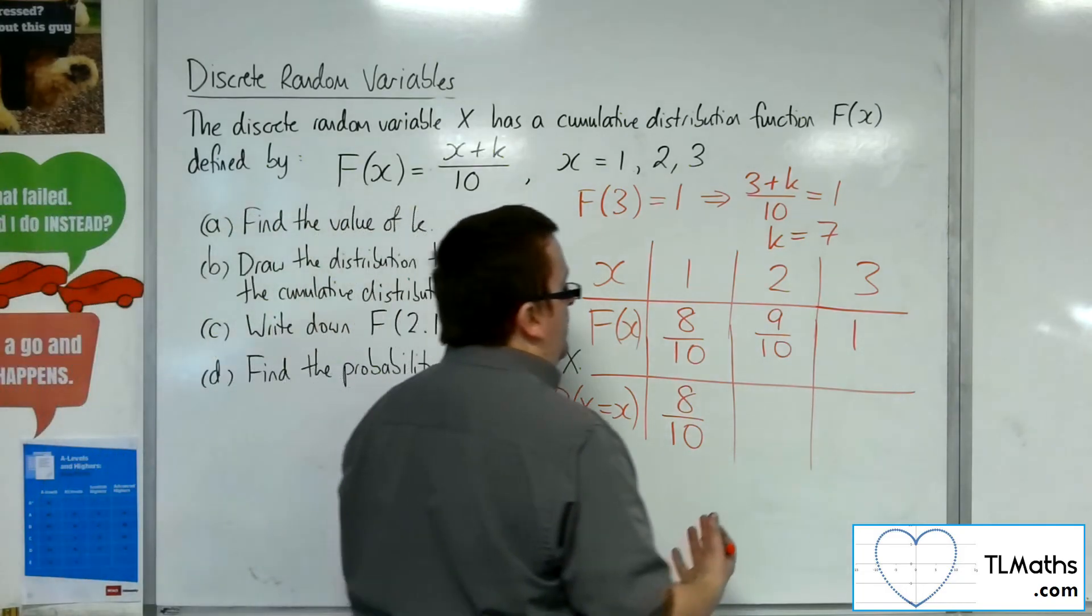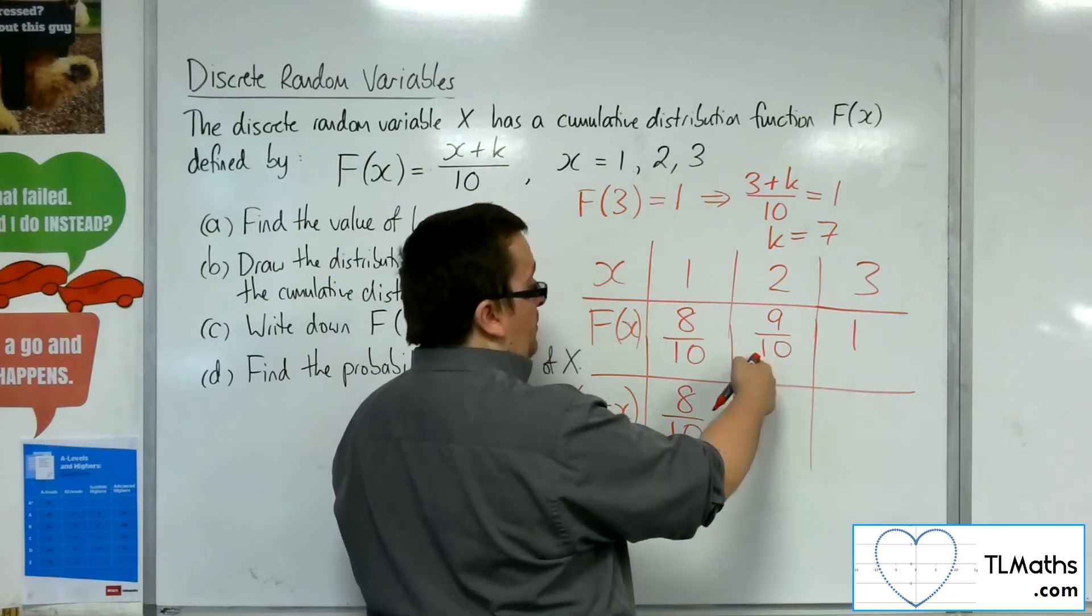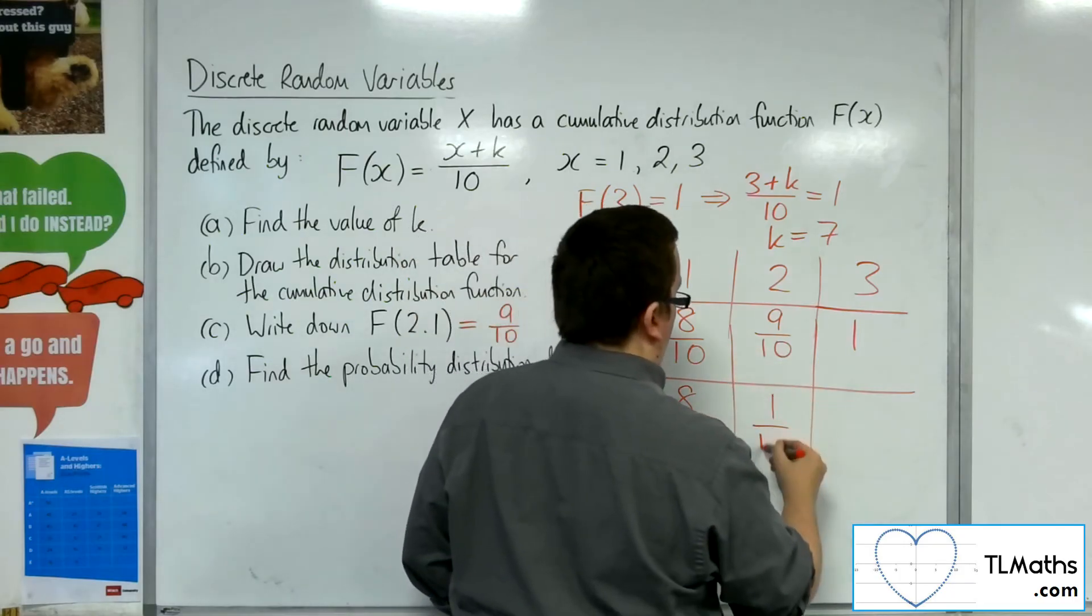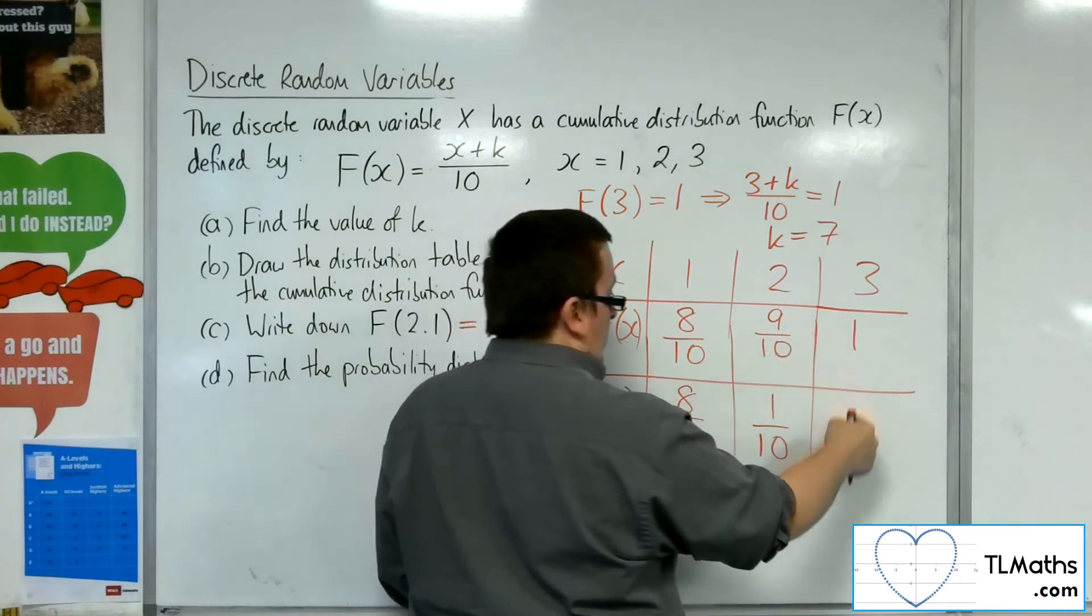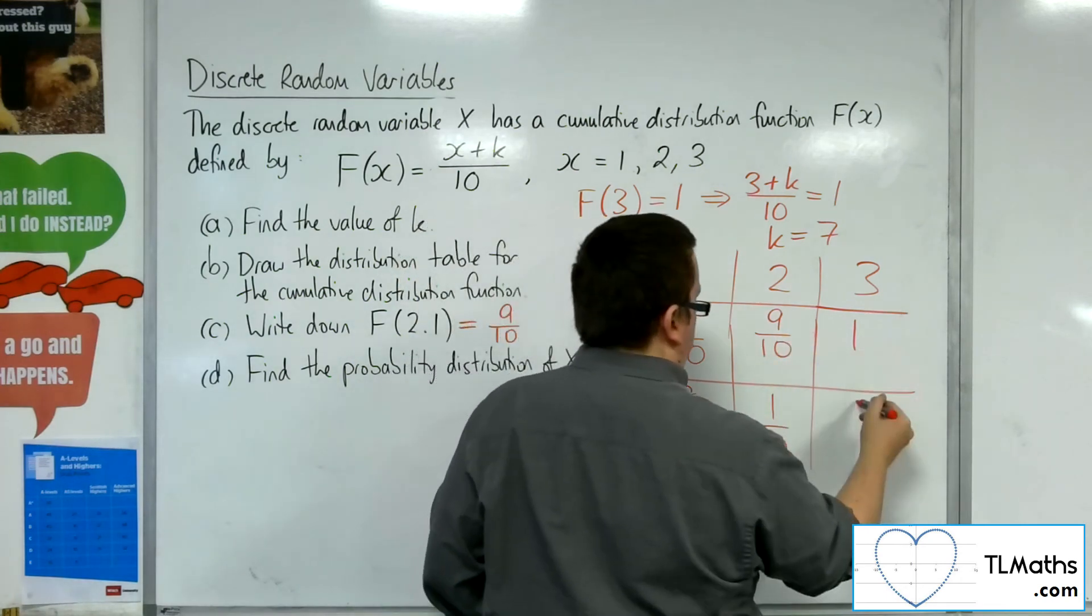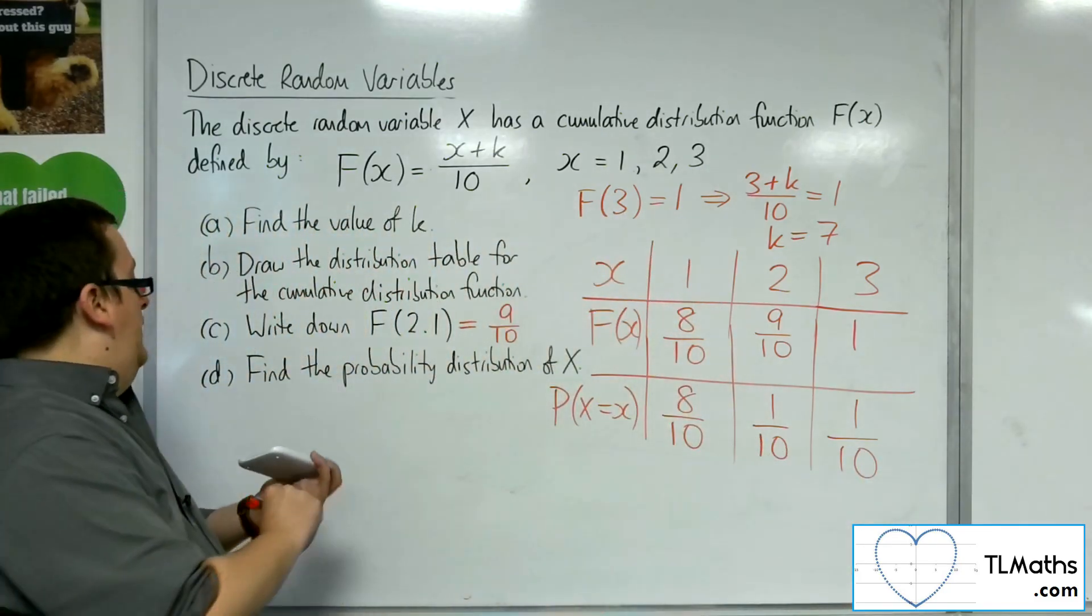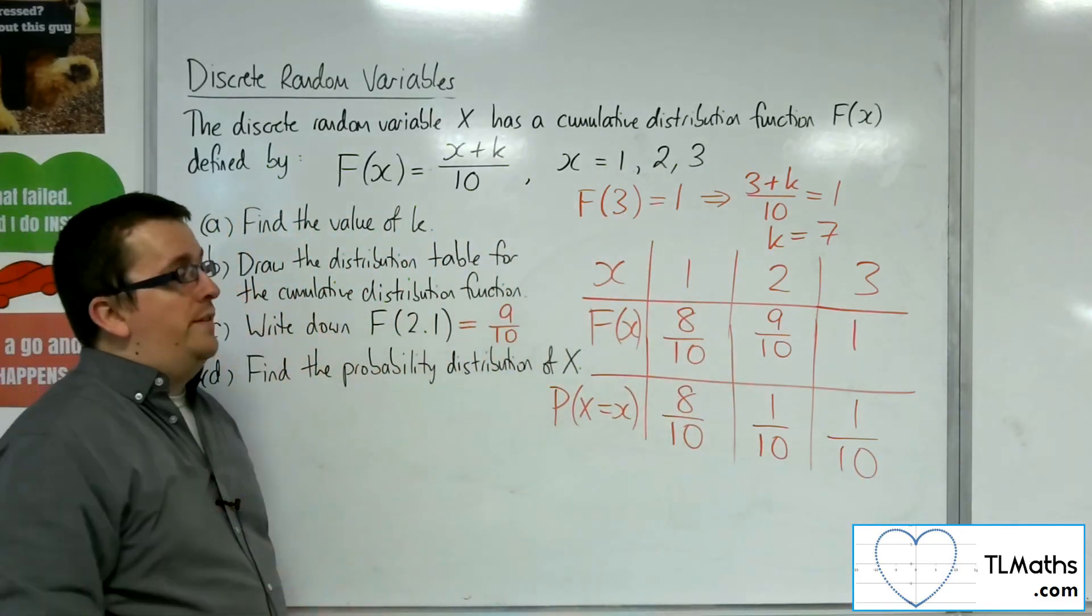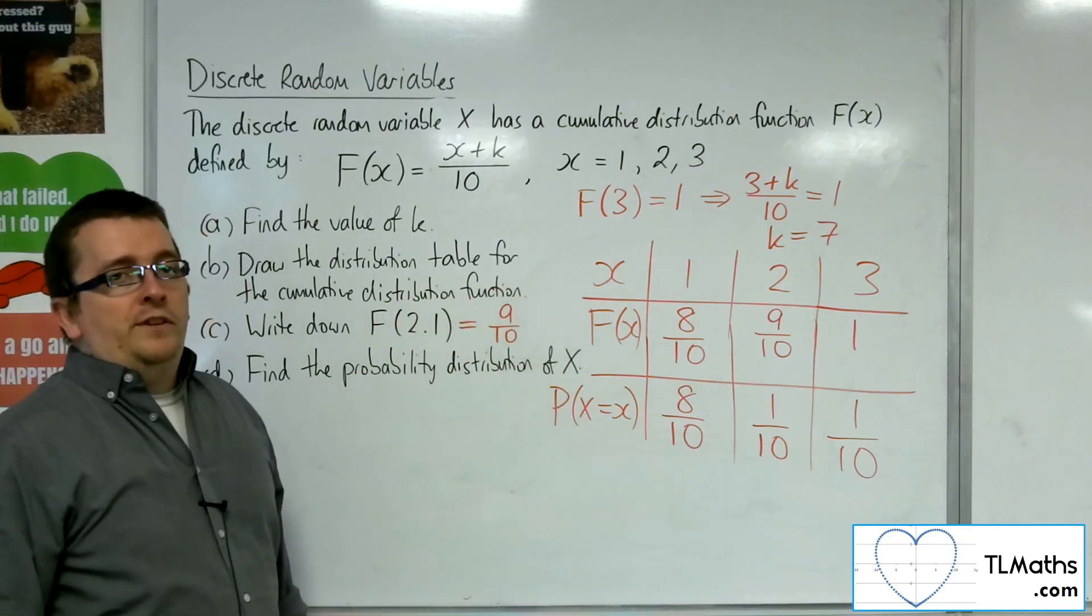Now we know that these are cumulative, so 8 tenths plus whatever that probability is must be 9 tenths. So that's got to be 1 tenth. And 9 tenths plus this probability have got to be 1, so that's 1 tenth also. And so there is your probability distribution of x brought back from the cumulative distribution.